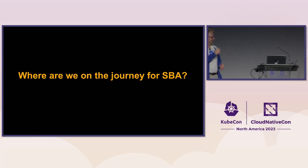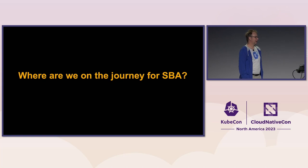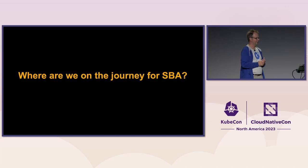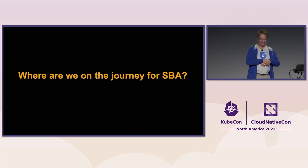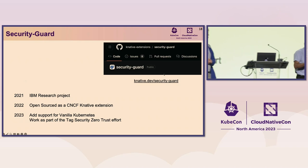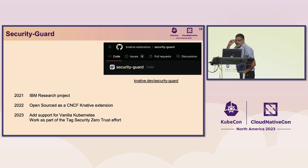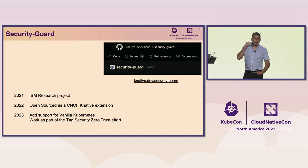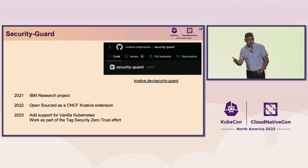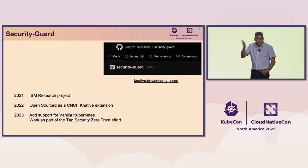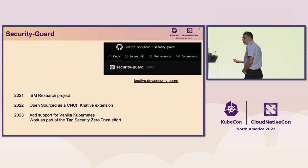This is a lot of theory, David. Do you have anything real we can look at? What is the journey of SBA — is there a tool for implementing these algorithms? And maybe even a demo? It used to be an IBM research project, then we moved it to open source as a Knative extension. Then we made it usable in Kubernetes as a sidecar, and we can now run it in any cloud native environment.